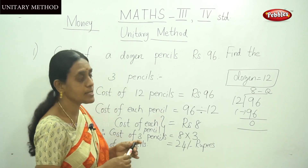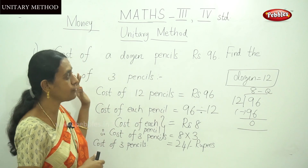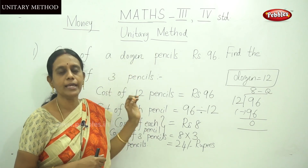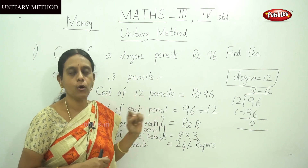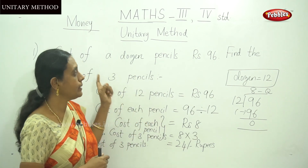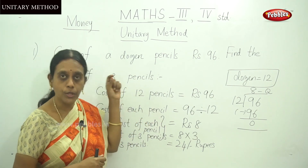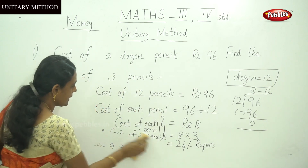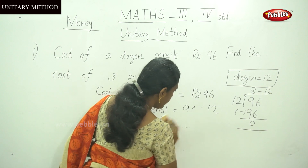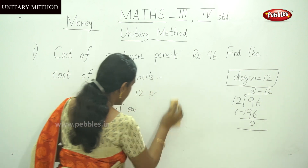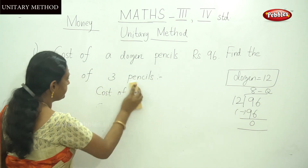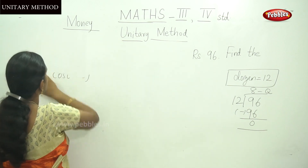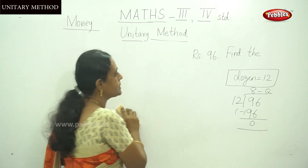Do you understand, children? That is the unitary method — to find the value of each item or each product. Let me do one more sum for easy understanding. I am going to write another example sum to calculate using the same unitary method.